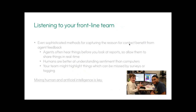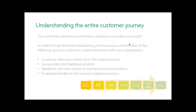Having humans supplement technology is really important — things can get missed by surveys or tagging. Real humans help you strike a balance between science and art. That mix of human and artificial intelligence is vital. Beyond the practical benefits, relying solely on technology can make your frontline team feel undervalued. Involving them in pinpointing problems and feedback keeps them engaged.